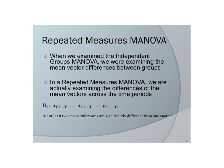When we examined an independent groups MANOVA in the previous lecture, we were examining mean vector differences between groups. We're still going to look at differences in mean vectors, but in repeated measures MANOVA, we are examining the differences of the mean vectors. We have mu time 1 minus time 2, mu trial 3 minus trial 1, and mu trial 2 minus trial 1 — mean vector differences.